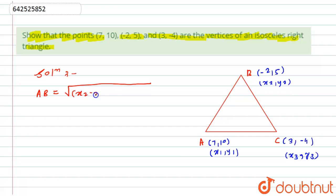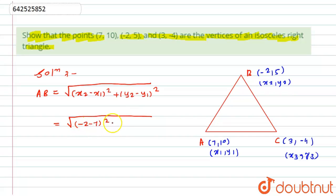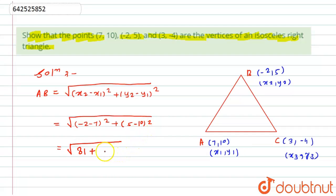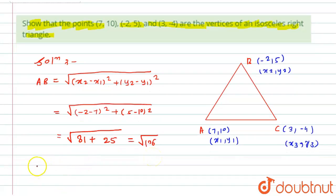The length of AB by using the distance formula equals √[(x₂ - x₁)² + (y₂ - y₁)²]. Substituting the values: (-2 - 7)² + (5 - 10)² = (-9)² + (-5)² = 81 + 25 = 106. So the length of AB is √106.